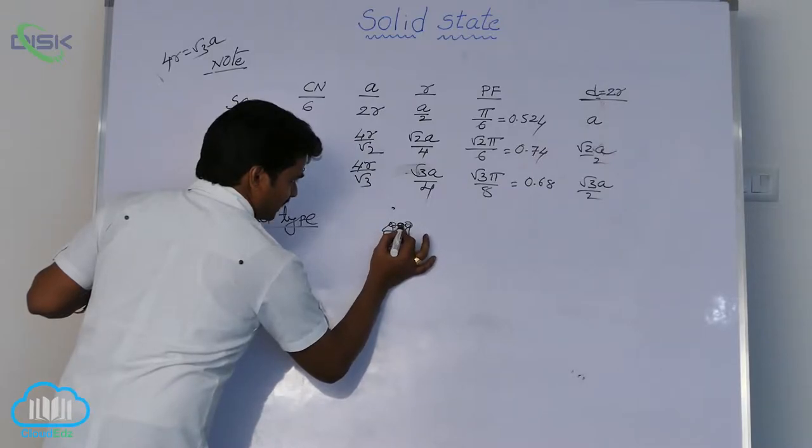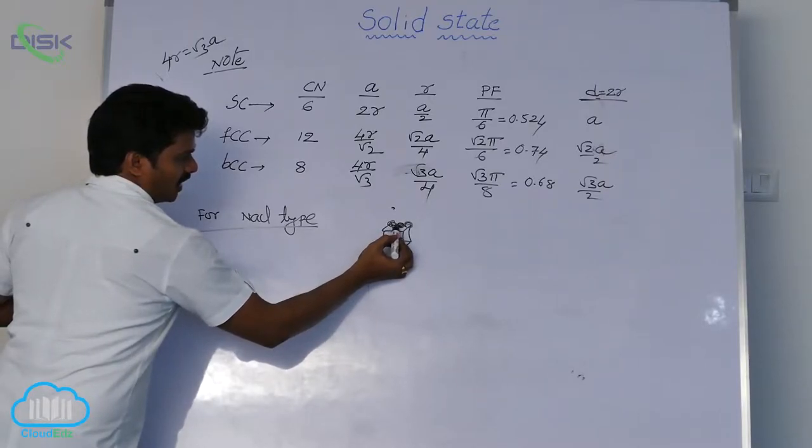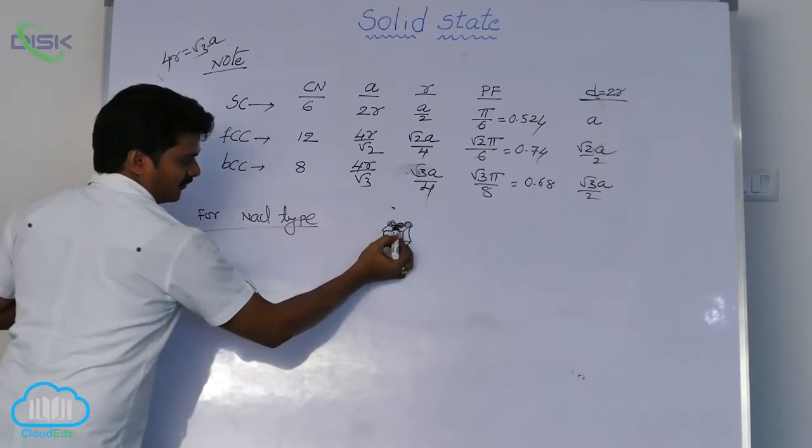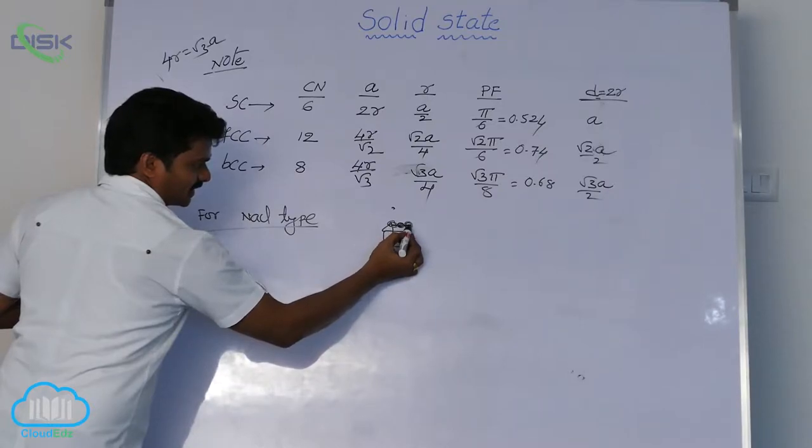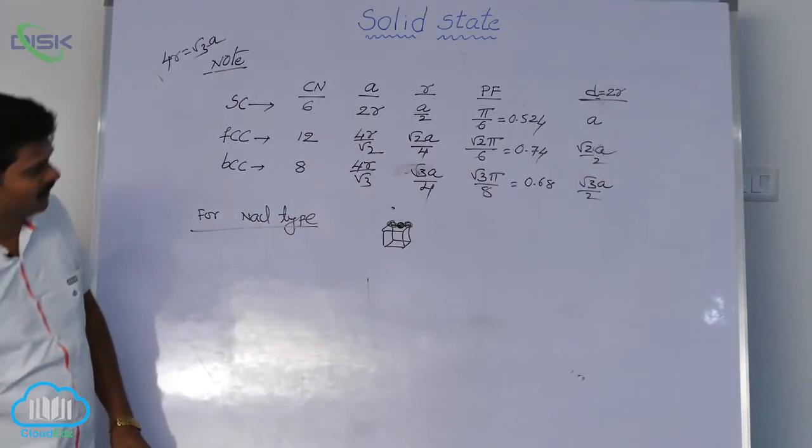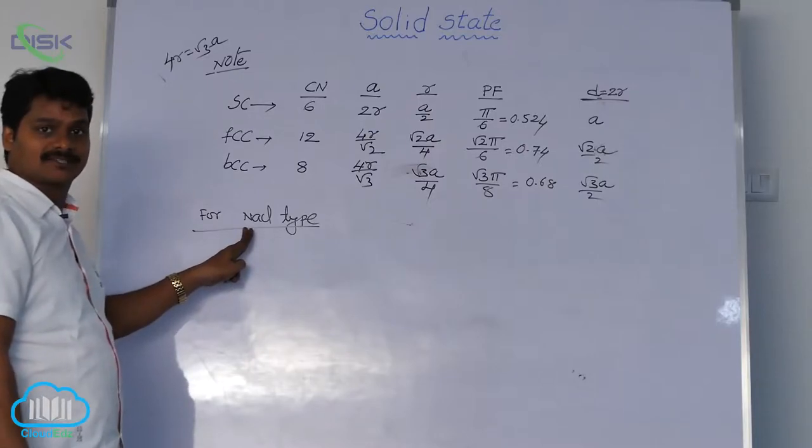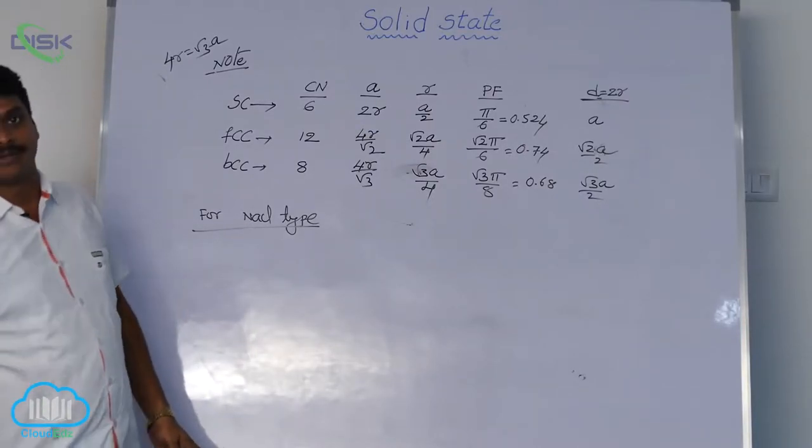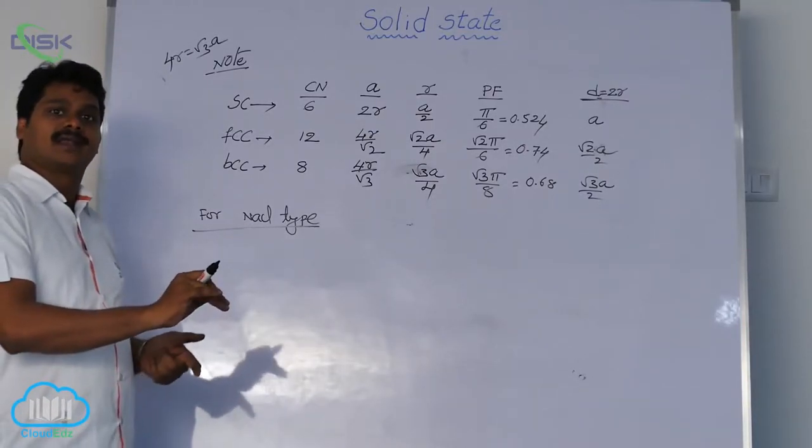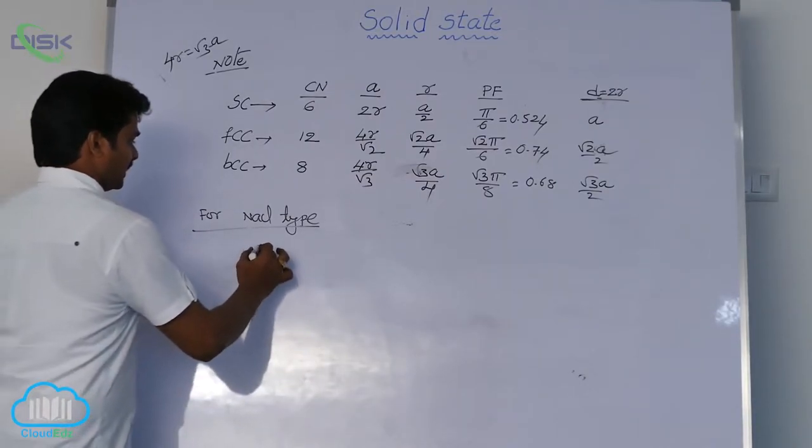That means edge length a is equal to radius of chloride ion, radius of another chloride ion, diameter of sodium ion. So for NaCl type, we use different formulas. Even though we studied this structure in FCC geometry, its coordination number and edge length formula, these are all different.